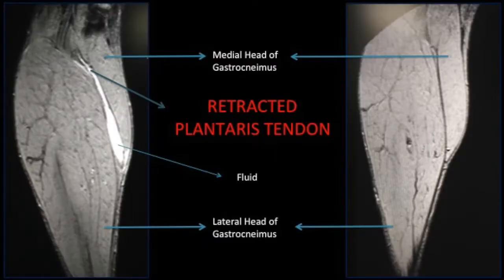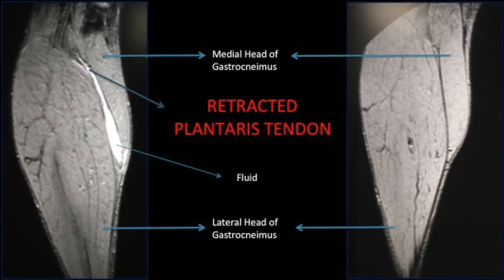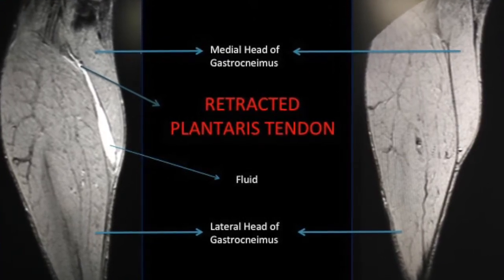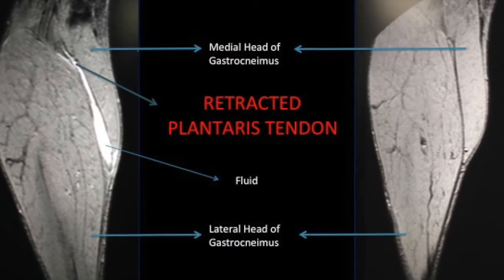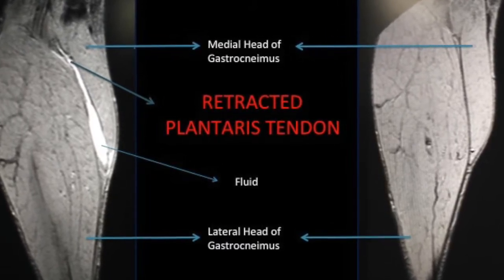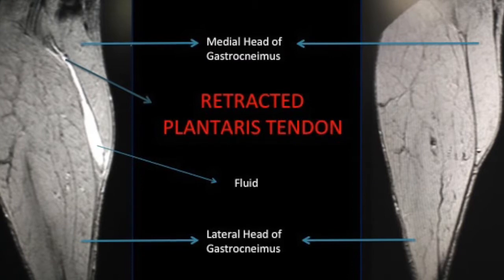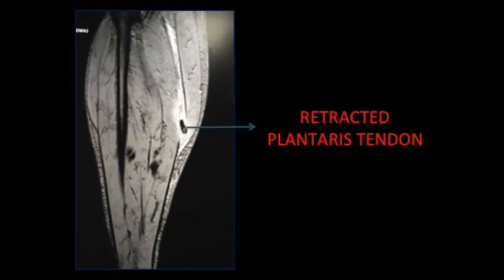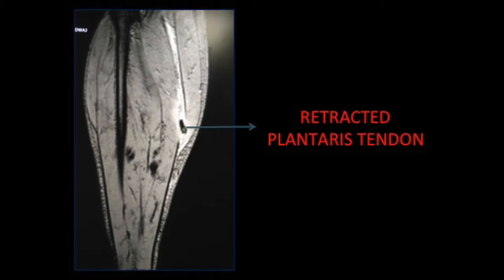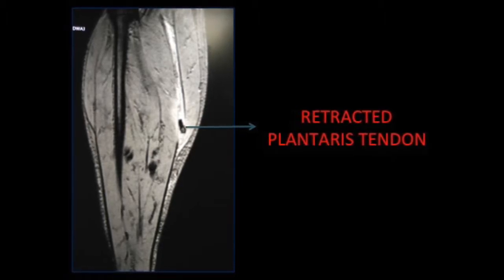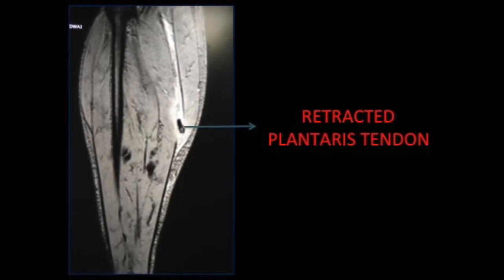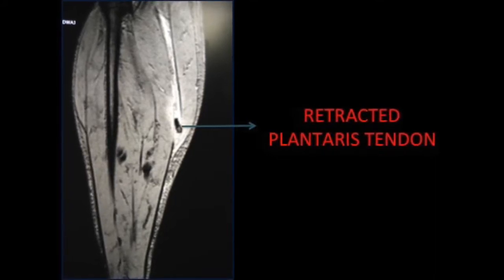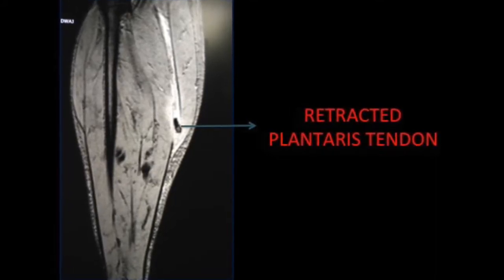The typical MRI findings involve an elliptical chink of fluid deep to the medial gastrocnemius and superficial to the soleus — this is classical. Sometimes focal disruption of the muscles can be seen, and there may be associated edema in the surrounding muscles. We can often see a retracted plantarus tendon if we carefully follow that entire chink of fluid.